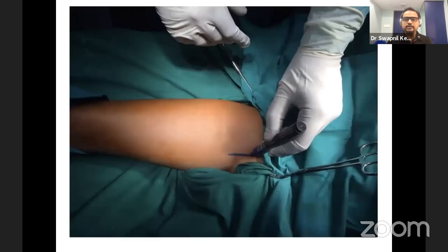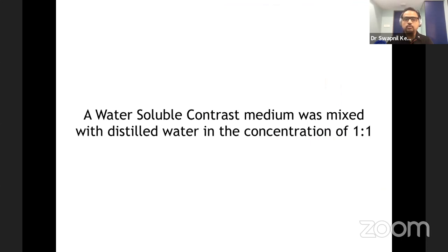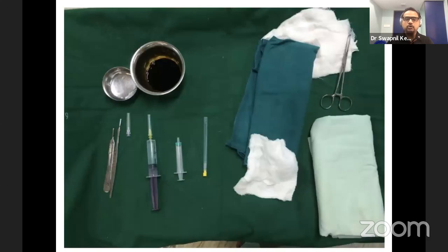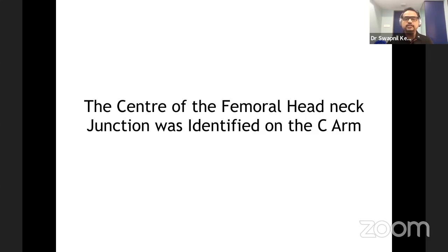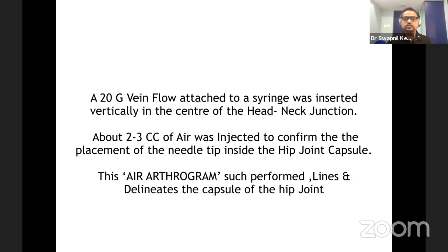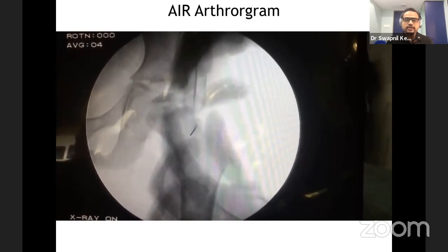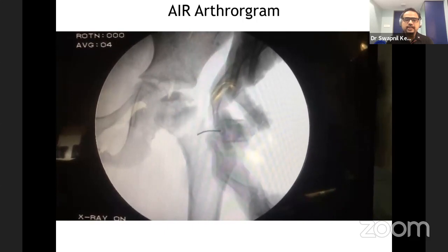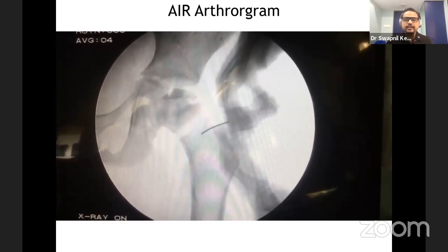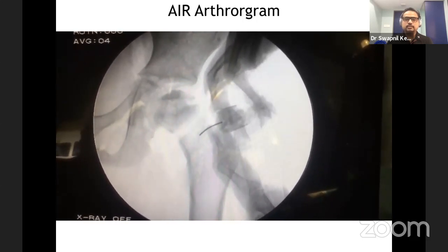The arthrogram is done in the operating room. Prep and drape the hip, mark the femoral artery to stay lateral to it. Use water-soluble contrast media with equal concentration of water and contrast medium. The center of the femoral head and neck junction is identified on C-arm. Take a 20-gauge vein flow attached to a syringe, insert it vertically at the center of the head-neck junction, then inject about two or three cc of air for an air arthrogram. The air arthrogram confirms the needle is inside the capsule. The entire capsule is lined by air, confirming intracapsular placement.